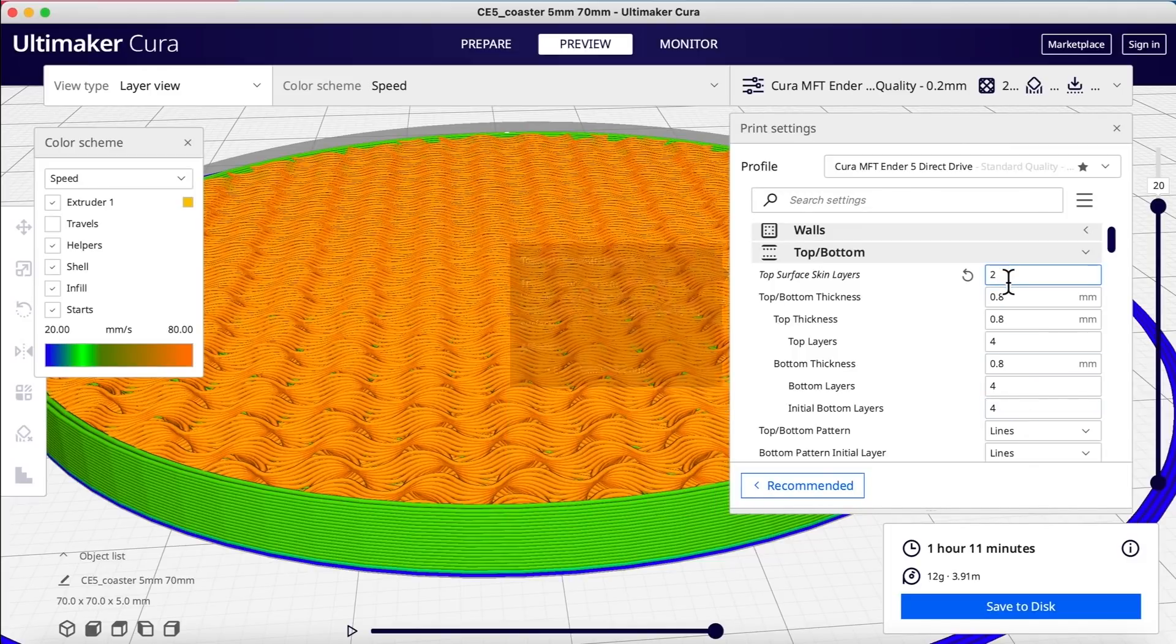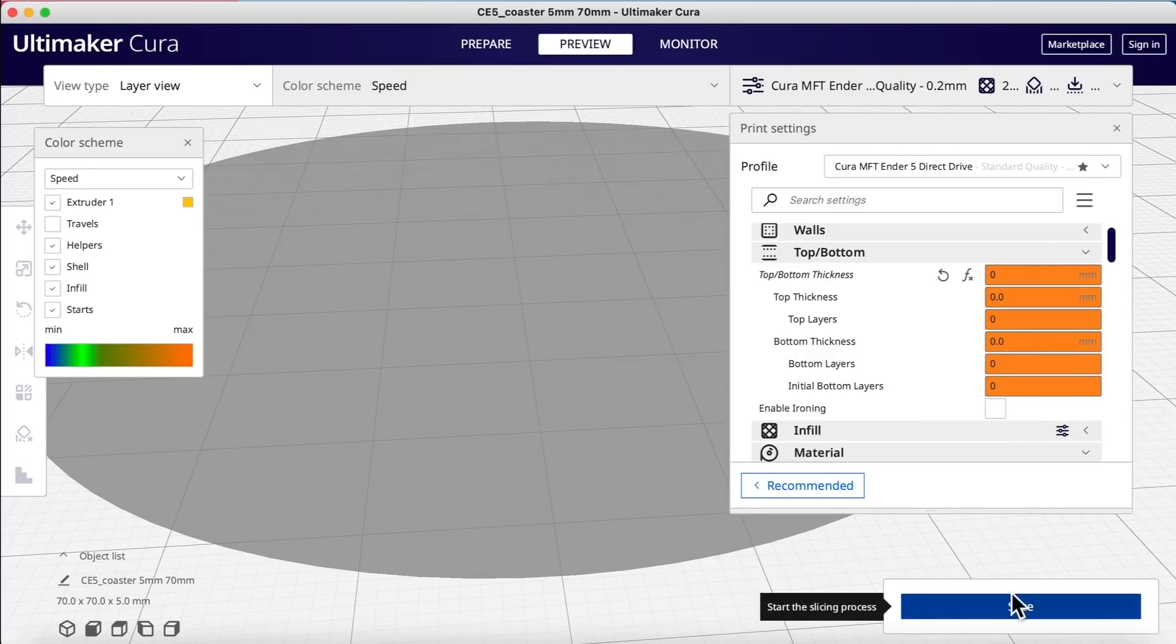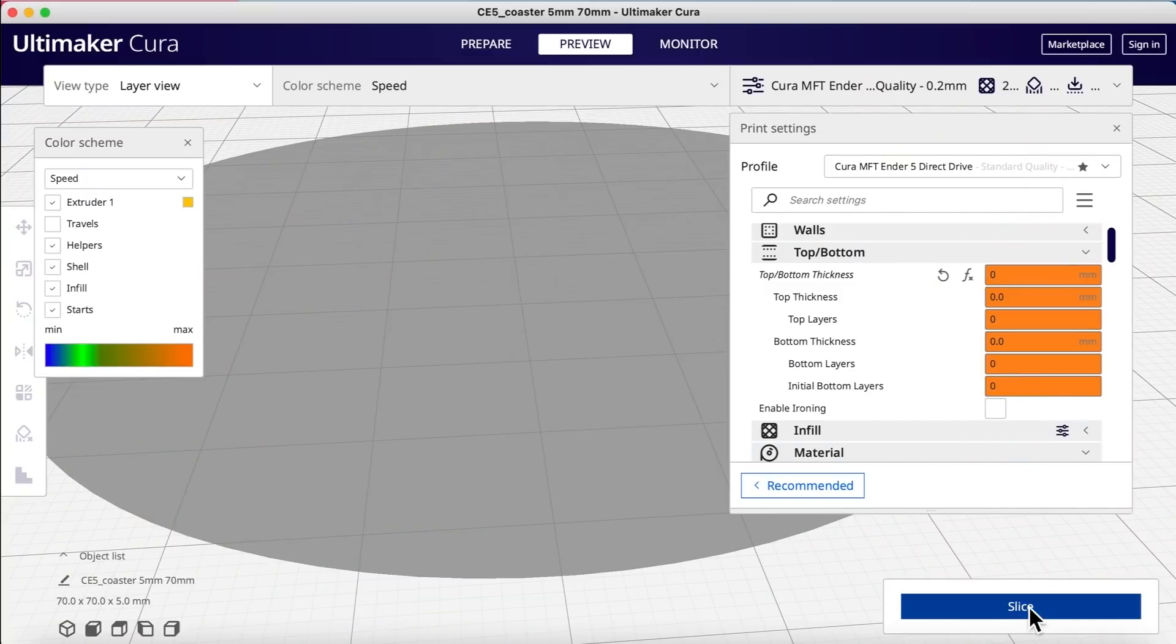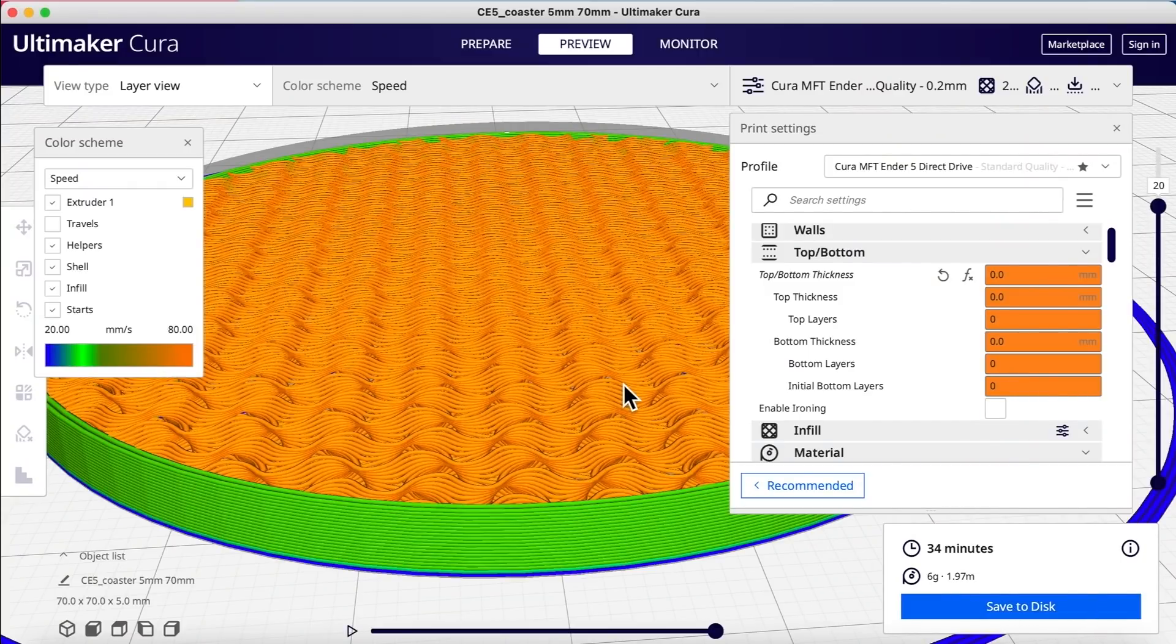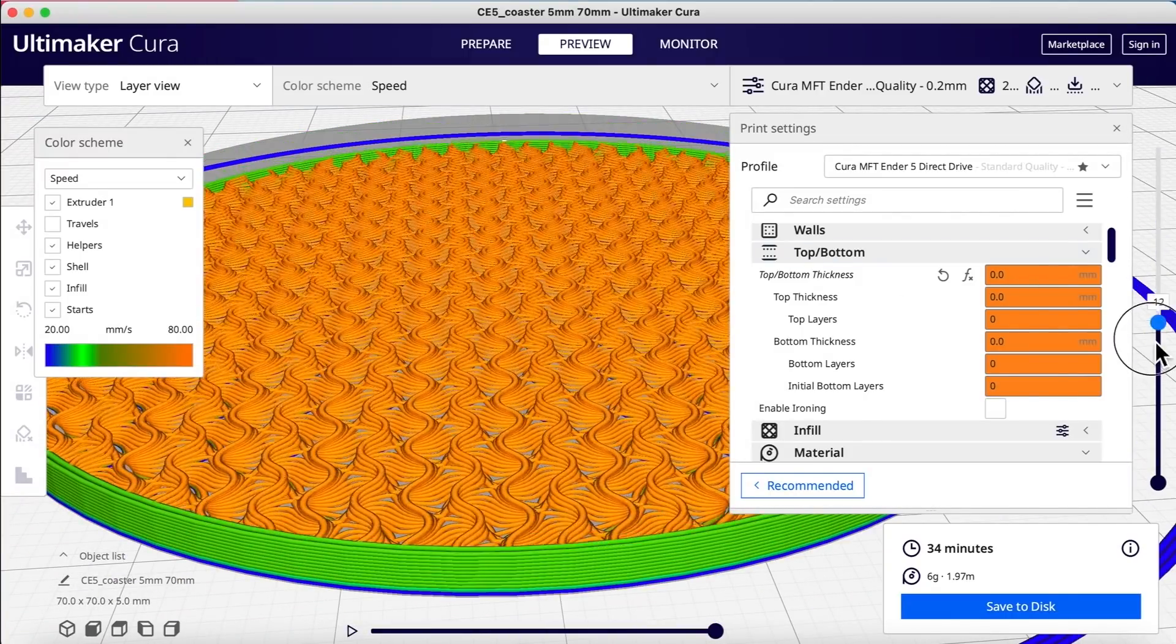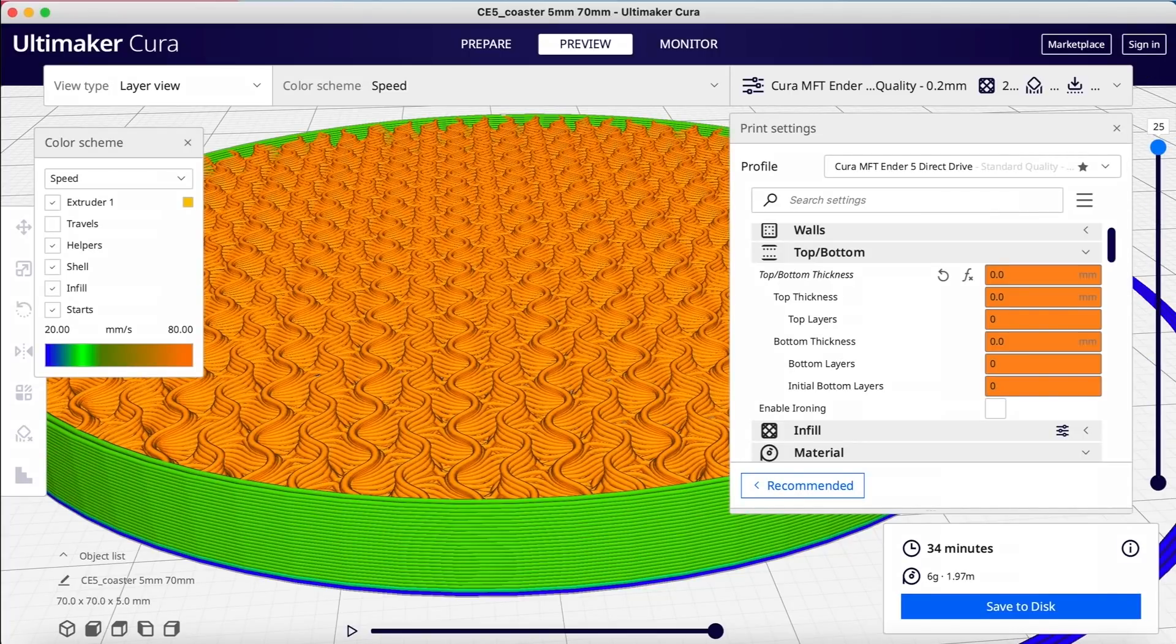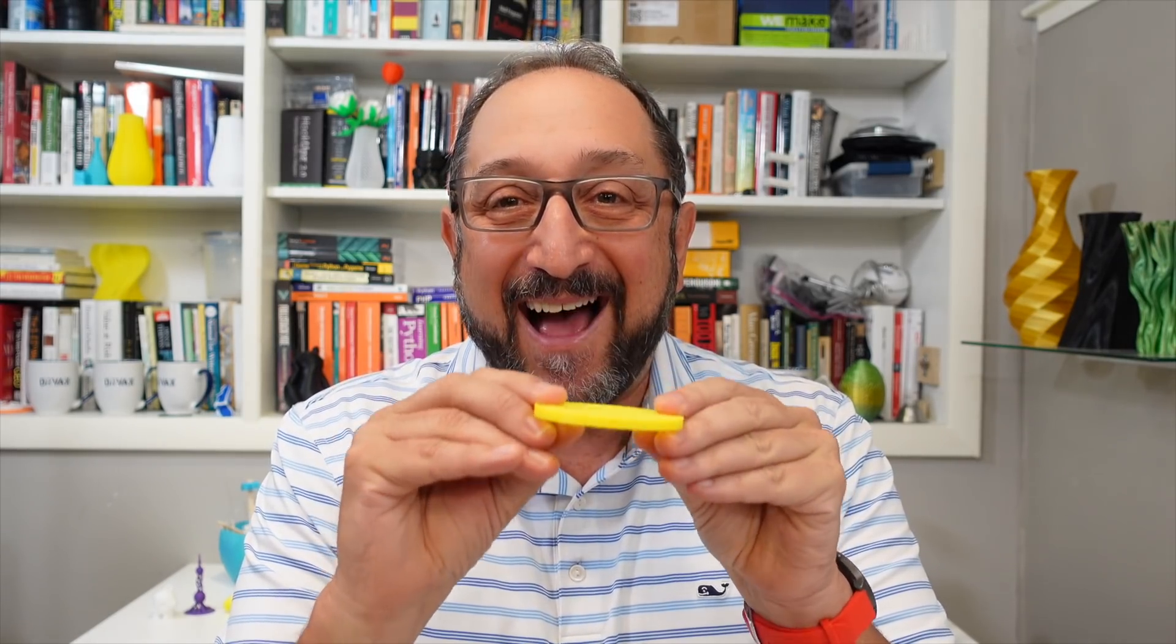Now, what if I set the skin to zero and the top and bottom to zero, and then slice our model. Now the orange is telling you that Cura thinks that might not be a great idea. So we need to know what we're doing. We know what we're doing here. I'm going to go ahead and slice this model. And now you'll see at the very top, there's no skin. And at the very bottom, there's no skin.